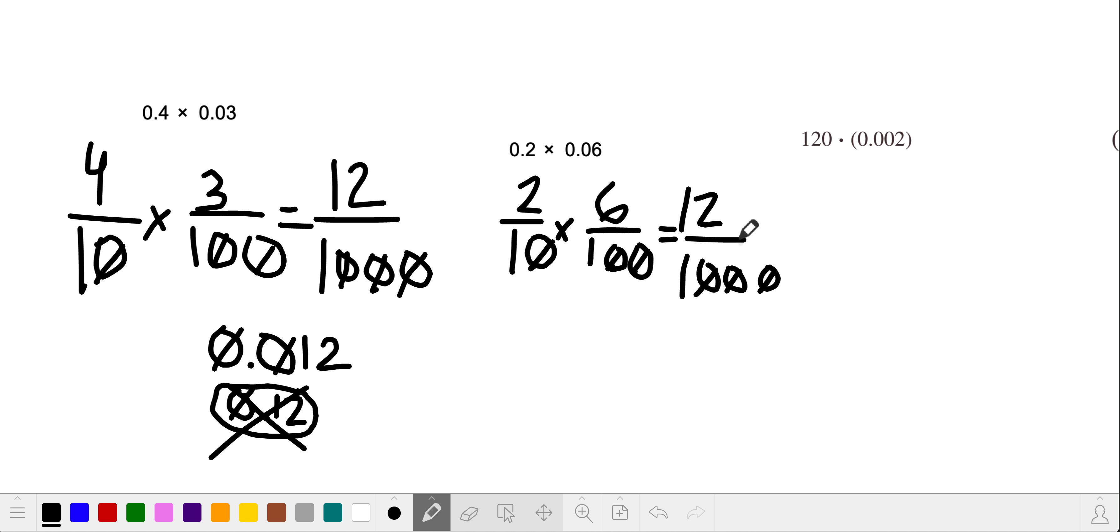And I had no idea this was going to be the same as the last answer, so it's 12 thousandths, which is what we got over here, too. That was unplanned. All right, next problem.